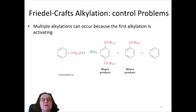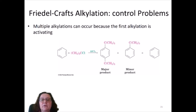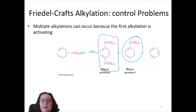Another problem with Friedel-Crafts alkylations is controlling what product you end up with. Sometimes you can get multiple alkylations — more than one alkyl group in the structure — because the first alkyl group that enters the structure activates the ring, making it more reactive, and then a second alkylation can occur. For example, the major product might be the introduction of two alkyl groups rather than one.